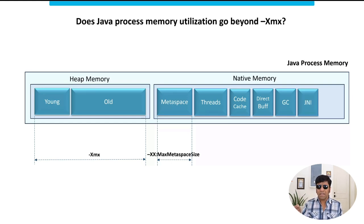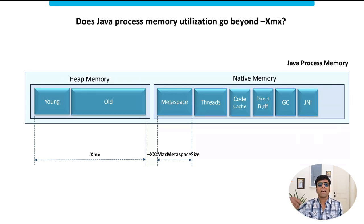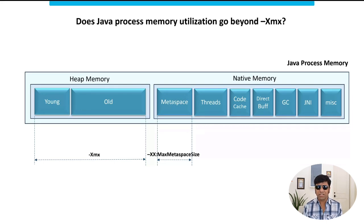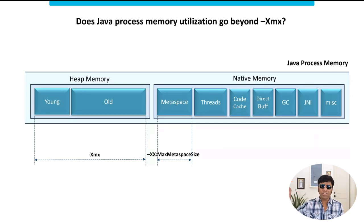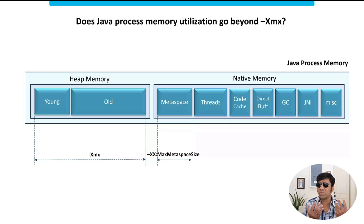The next region is called JNI. If your application is talking with native processes like C or C++ processes, that needs memory, which comes from this JNI region. And there is one more category called miscellaneous — certain JVM vendors have their own data structures and implementations to execute their JVM, and those need some memory, bucketed as the miscellaneous region. So we have these multiple regions, and based on which region saturates, an out-of-memory error gets thrown.